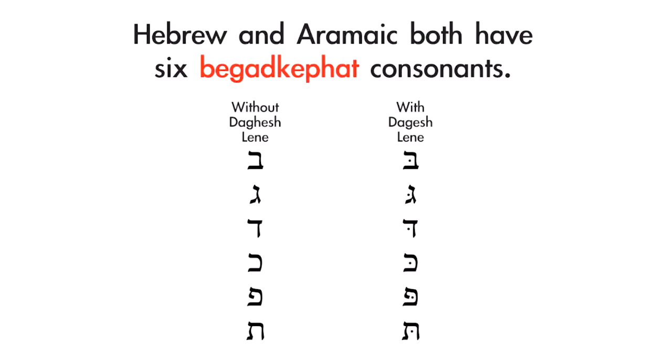Hebrew and Aramaic also share the six so-called Bagad-Kafat consonants. The Bagad-Kafat consonants are those consonants that have not two forms, but two sounds — a soft sound and a hard sound. The way you distinguish between soft and hard is the presence or absence of the Dageshlene in the Bagad-Kafat consonant. The Dageshlene is that small dot that appears in the middle of the consonant. You'll see two columns of consonants — those are the six Bagad-Kafat consonants.